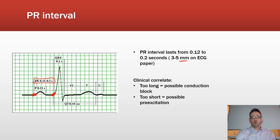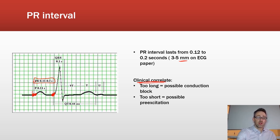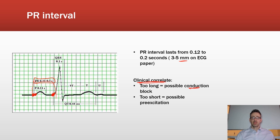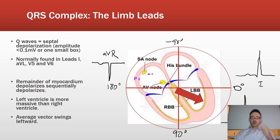Clinically, if the PR interval is greater than 0.2 seconds — more than one large box — that suggests a possible conduction block, perhaps scar tissue slowing conduction through the AV node. If it's less than 0.12 seconds — less than three small boxes — that's too short, suggesting a pre-excitation syndrome where the ventricles fire too soon.